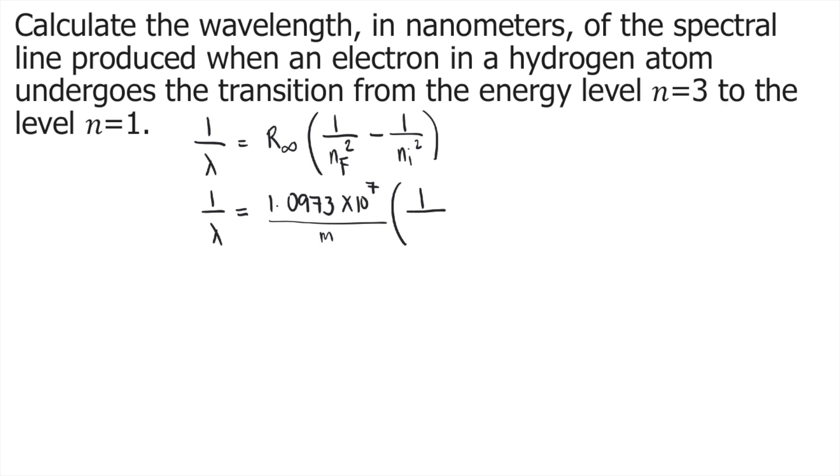nf is the final n value. According to the problem, the final n value is n=1, so that's 1². And ni is the initial n value, which is n=3, so that's 3².